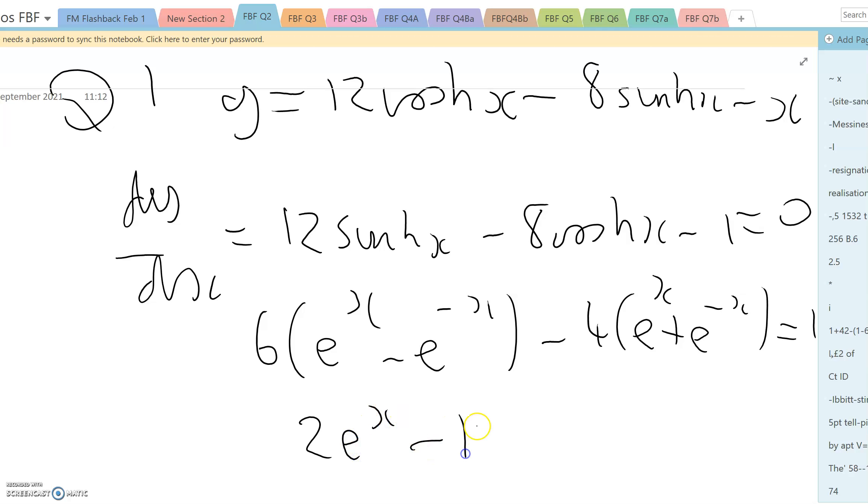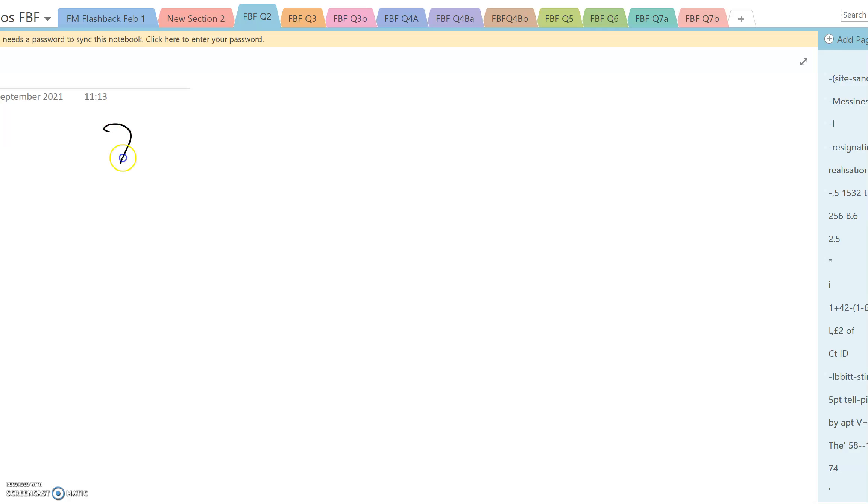Minus 10 e to the minus x equals 1, and that in turn becomes 2 e to the 2x minus e to the x minus 10 equals 0, and that will factorize into 2 e to the x minus 5 times e to the x plus 2 equals 0.